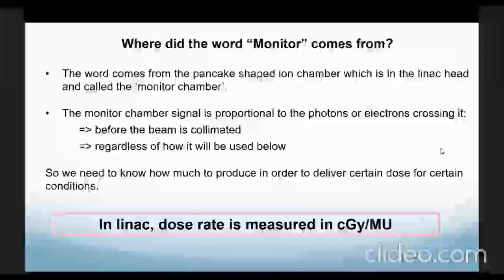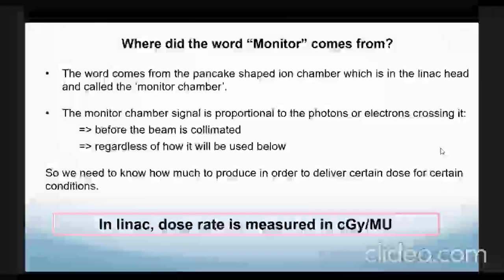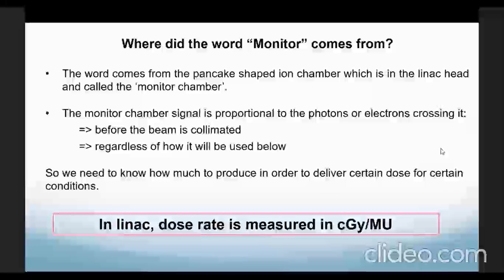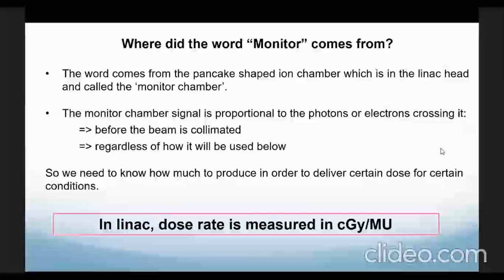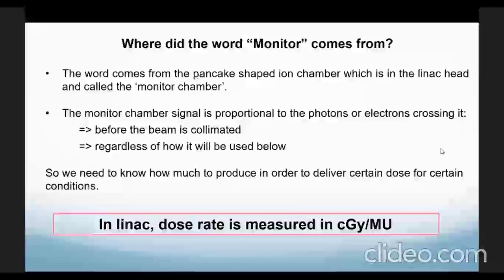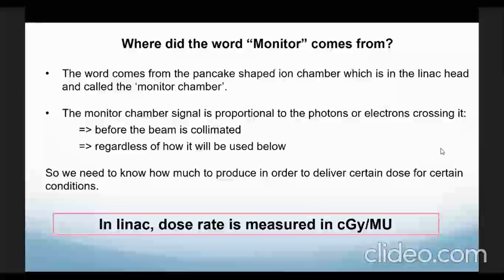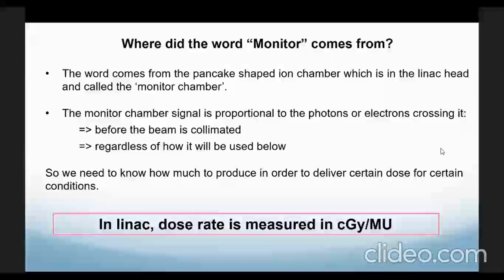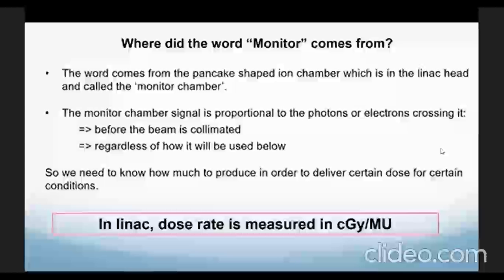Another question is: where does the word 'monitor' come from when we say monitor unit? This word comes from the linear accelerator components — there is a pancake-shaped chamber in the linac head, and that chamber is called the monitor chamber. The monitor chamber signal is proportional to the photons or electrons crossing it, before the beam is collimated, regardless of how it will be used in the patient.